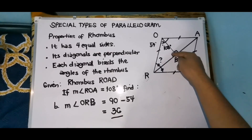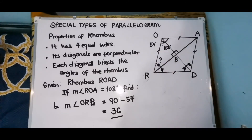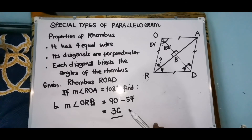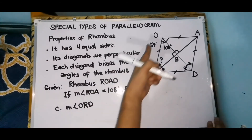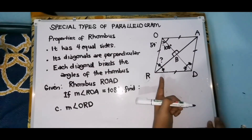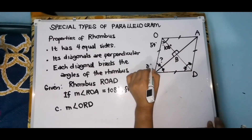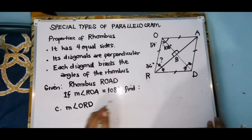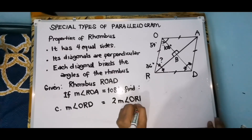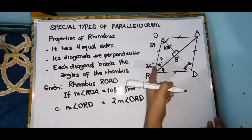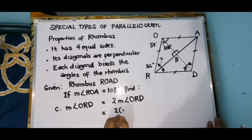Again, since this is a 90 degrees, these two angles ay complementary, so to get ORB we subtract 54 from 90 — that is 36 degrees. And last but not the least, we need to find the measurement of angle ORD. Na-solve na natin sa letter B na si ORB ay 36 degrees. So kukuha na natin itong buong angle, and that is measurement of angle ORD is twice the measurement of angle ORB, because these two angles ay congruent. So dodobling lang natin yung 36 degrees — that is 2 times 36, equal to 72 degrees.